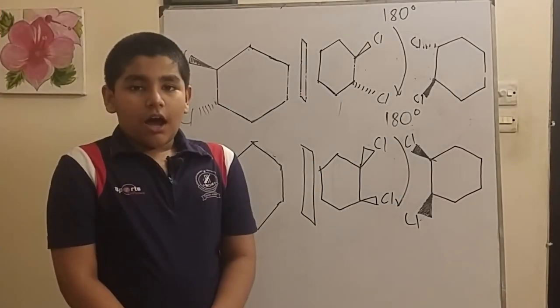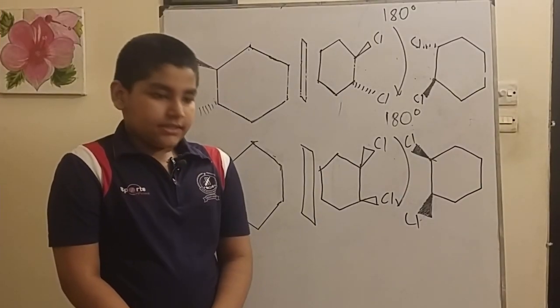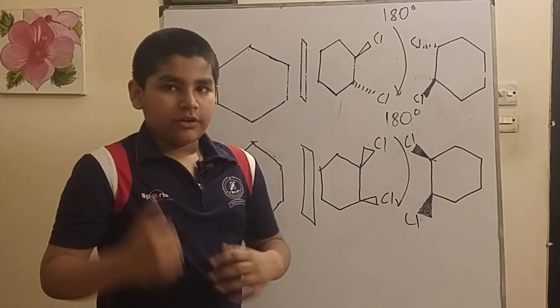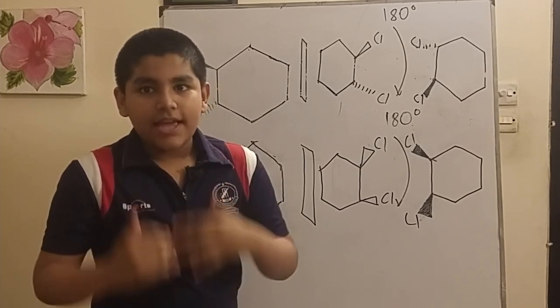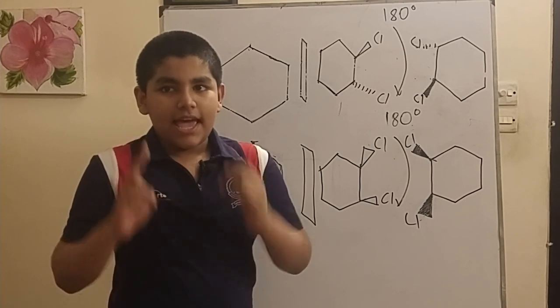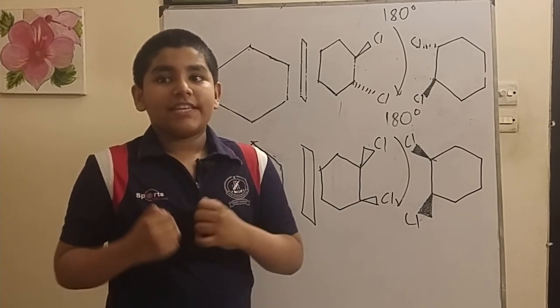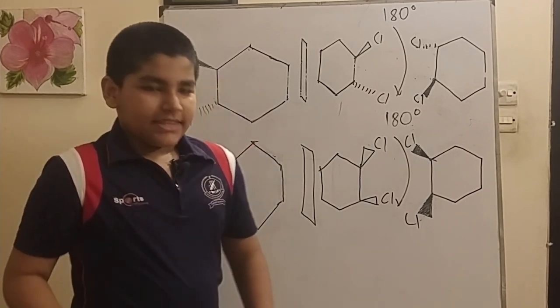Assalamu alaikum everyone. Today we are going to be talking about meso compounds and diastereomers. If a compound has one chiral center, then it is chiral overall and it will exist as a pair of enantiomers. But that isn't always the case.